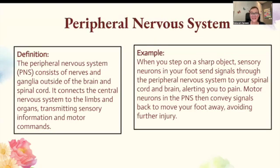The peripheral nervous system consists of nerves and ganglia outside of the brain and spinal cord. It connects the central nervous system to the limbs and organs, transmitting sensory information and motor commands. When you step on a sharp object, sensory neurons in your foot send signals through the peripheral nervous system to your spinal cord and brain, alerting you to the pain. Motor neurons in the PNS then convey signals back to move your foot away, avoiding further injury.